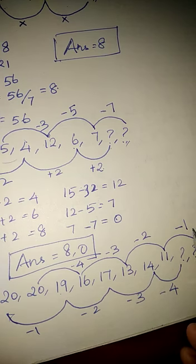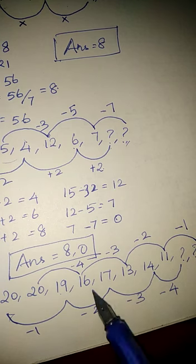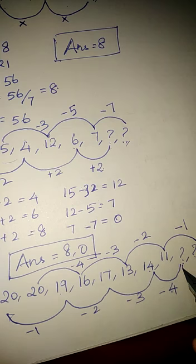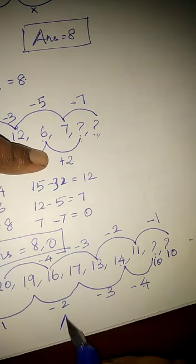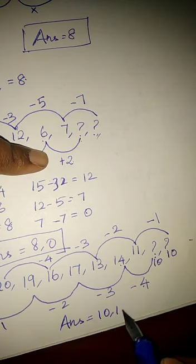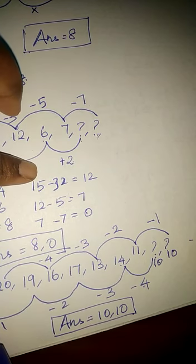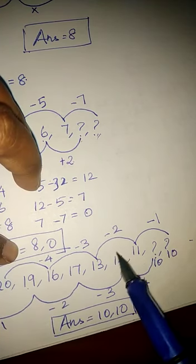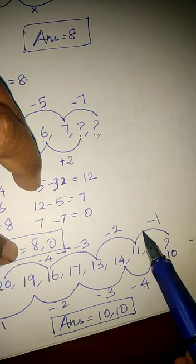So what will come here? 14 minus 4 gives 10. So first one is 10. Then 11 minus 1 gives 10. Hence the answer is 10 comma 10. The minus 1 minus 2 in increasing order here, but here it's a reversal order. So 14 minus 4 gives 10, 11 minus 1 gives 10.